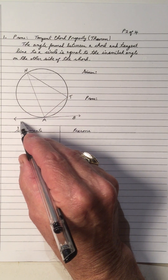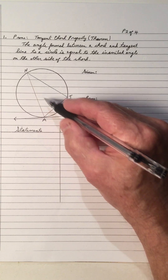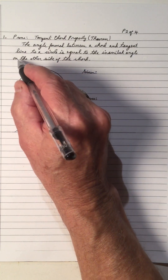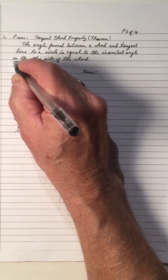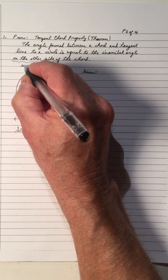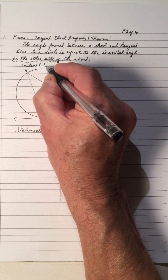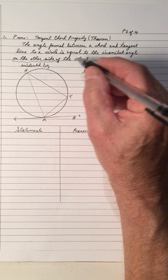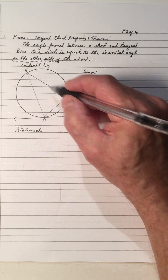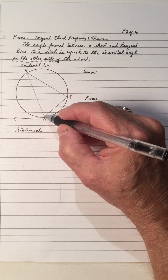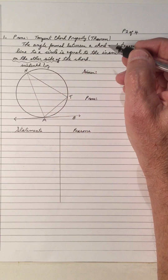We have a tangent and a chord shown in the diagram. The inscribed angle on the other side of the chord is subtended by the chord — in other words, the inscribed angle is cutting off that arc, or is subtended by this chord.